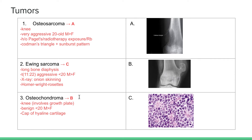Osteochondroma is a benign tumor usually located at the knee involving the growth plate. You can even see the bone marrow going inward into this little protrusion, and this protrusion has a cap of hyaline cartilage.